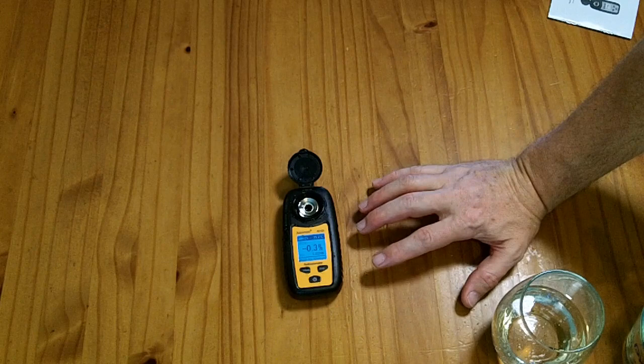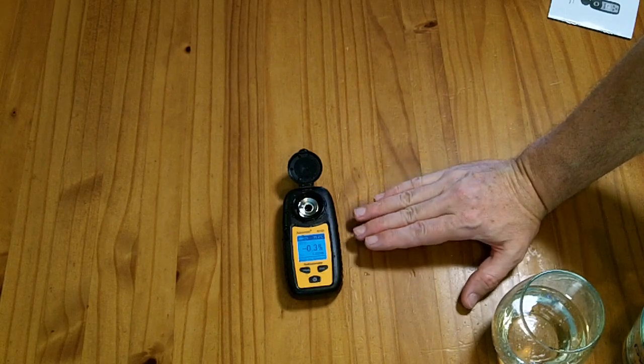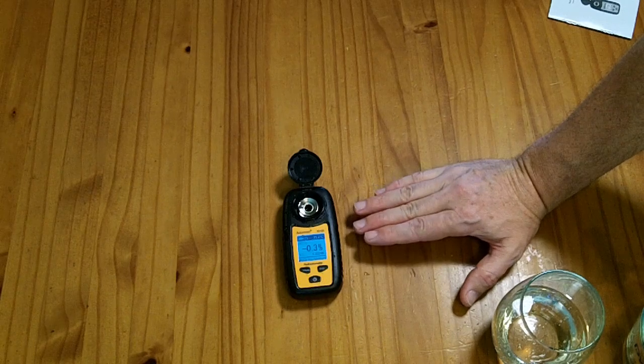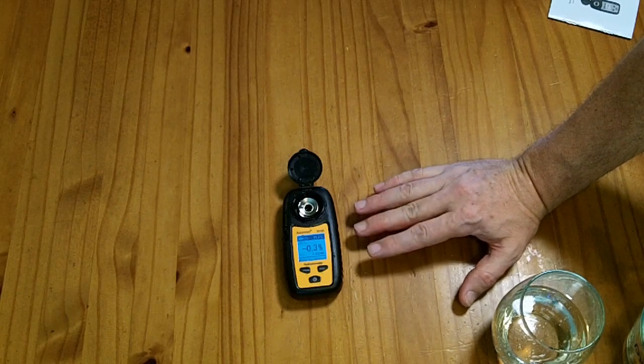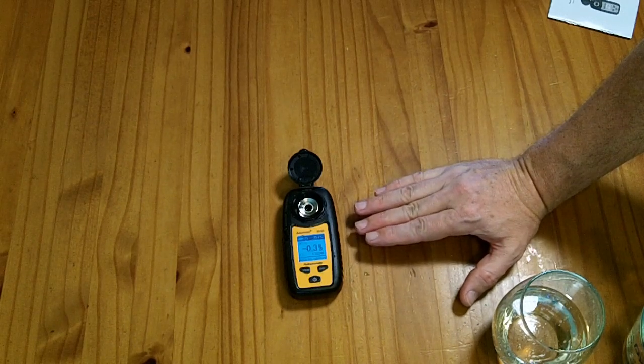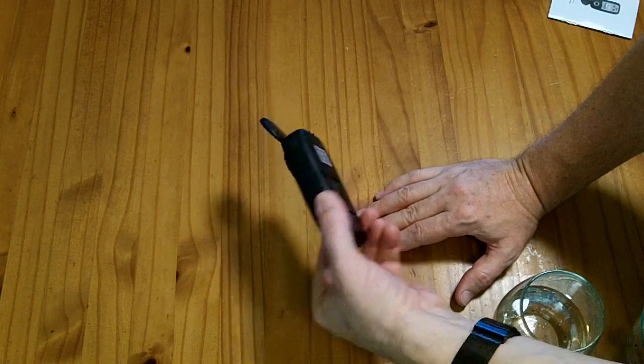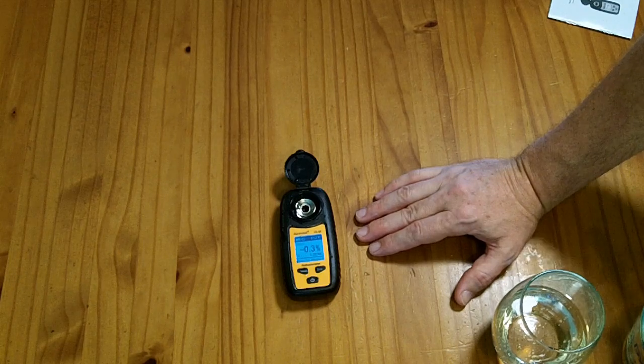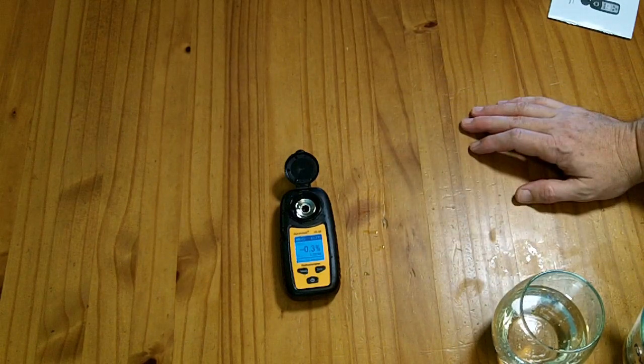This meter mostly works. It's not as accurate as it claims to be. It seems to be within a couple of percentage points of the actual brix rating of the various types of sugary water and sodas that I've put into it. So if you're looking for something small and inexpensive, doesn't have to be super high accuracy, this guy's going to work out okay for you.